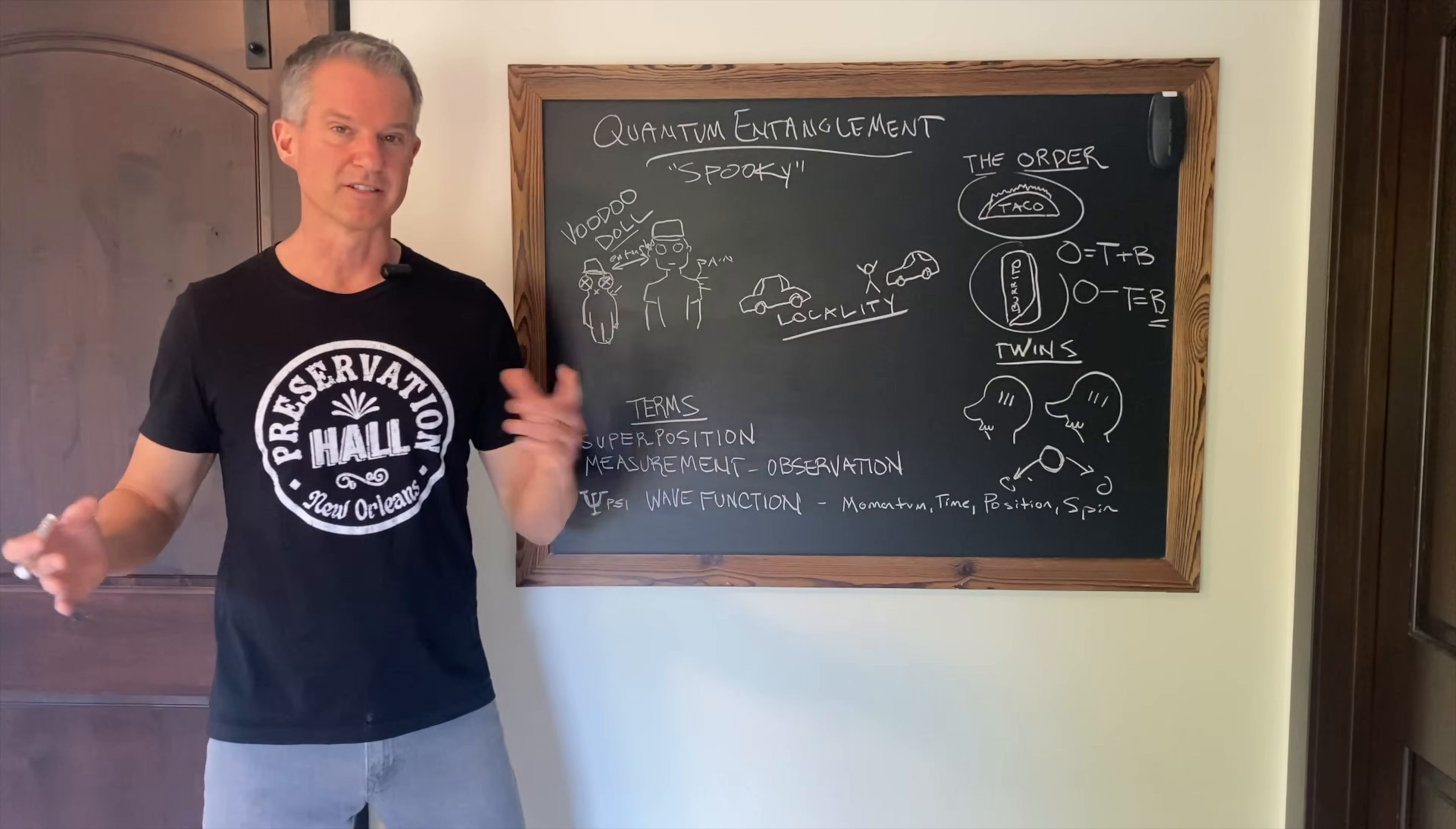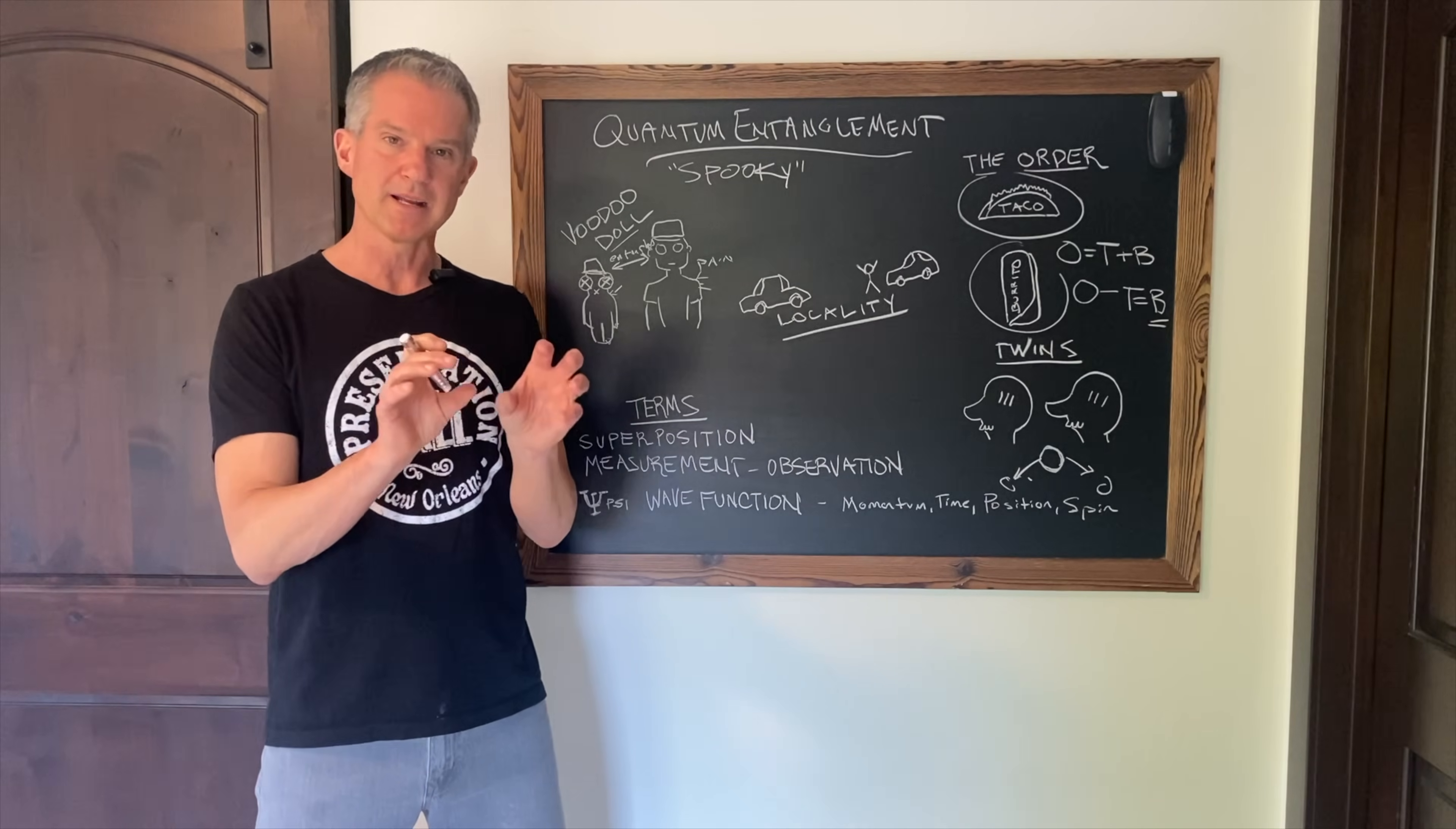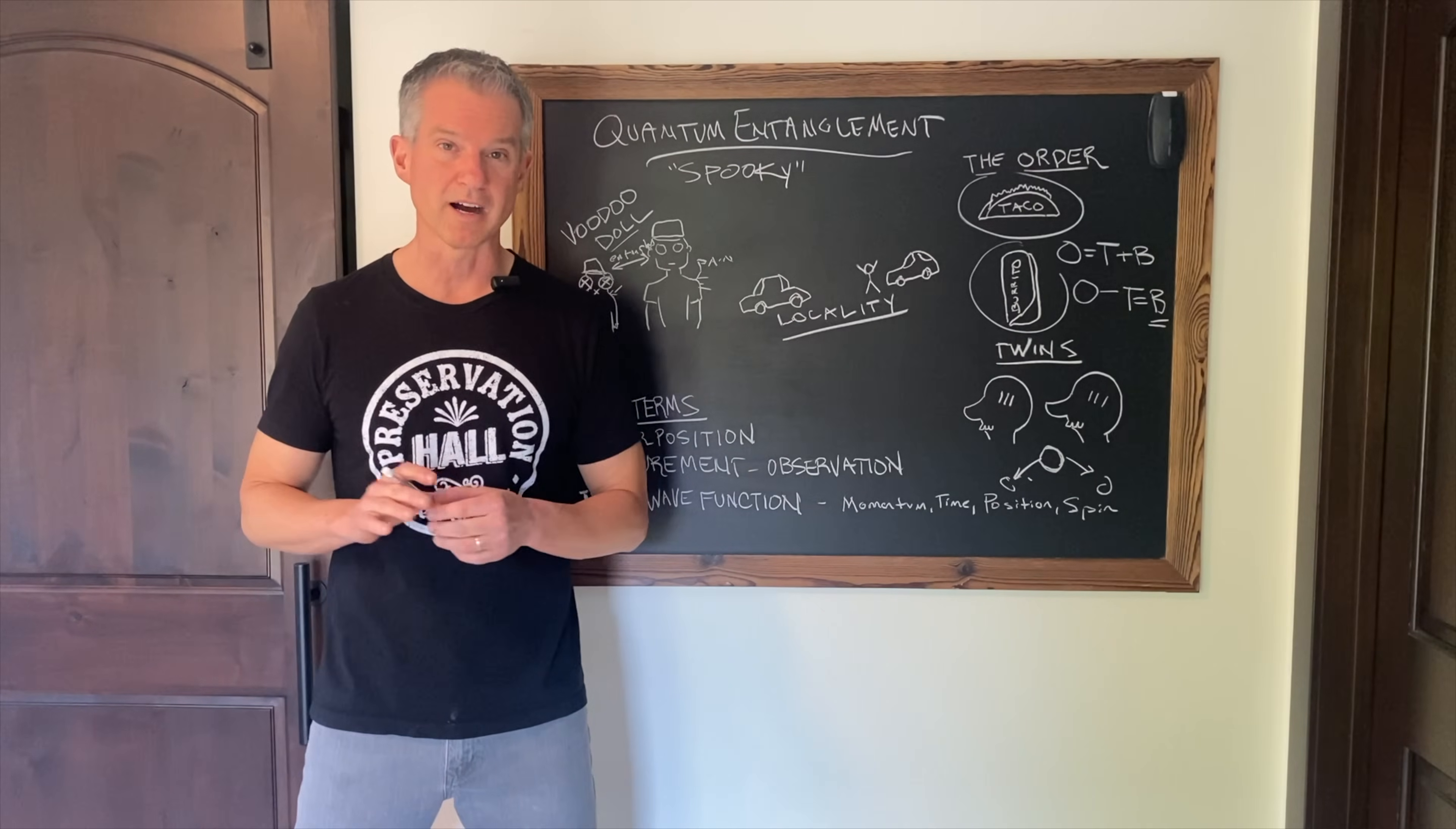And the spookiest thing about entanglement is this. When a pair of particles become entangled, it doesn't matter how great the distance is between them. They remain connected. It could be across the entire universe. They might as well be in the same little matchbox. And it's stranger than that. They don't even have to be in the same time to be entangled. Entanglement can not only span vast distances of space, but it can also reach across time.